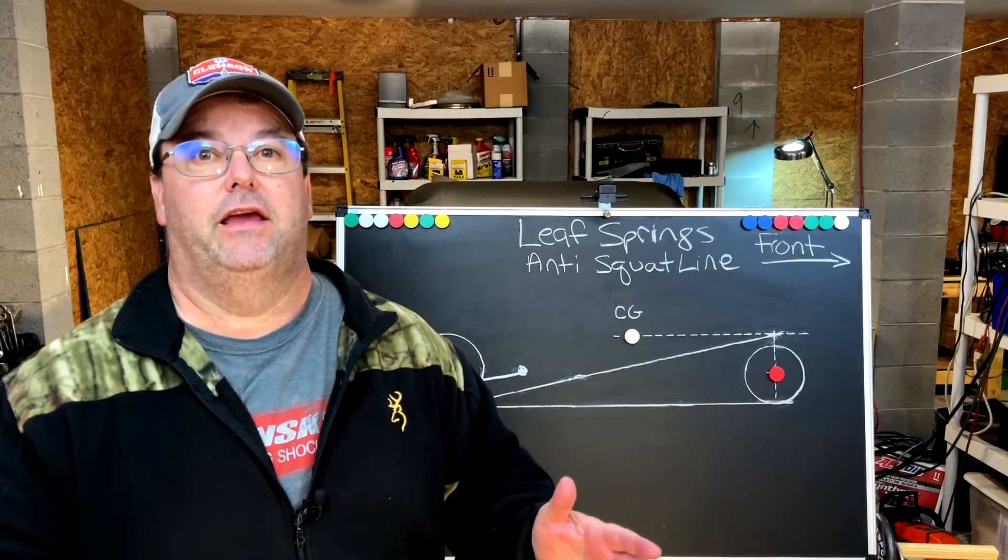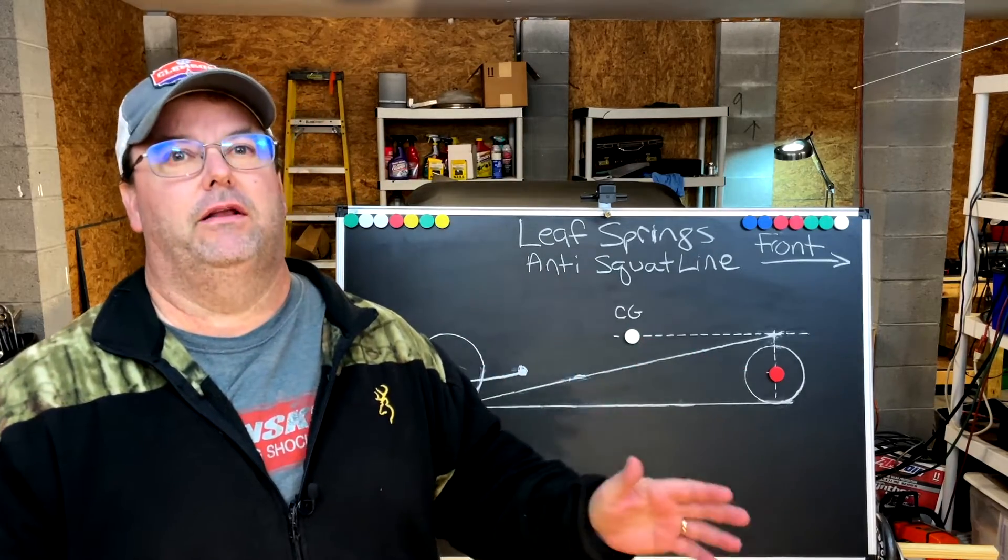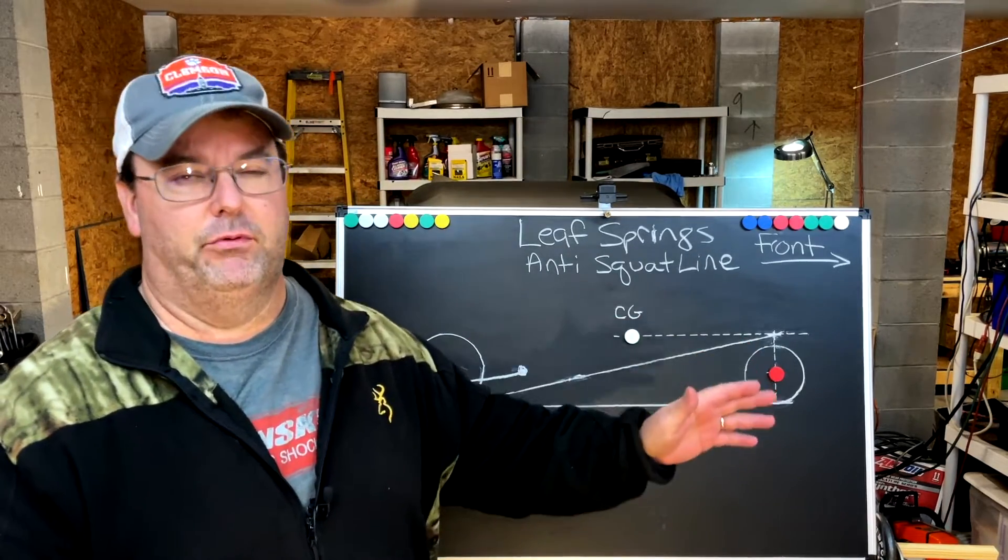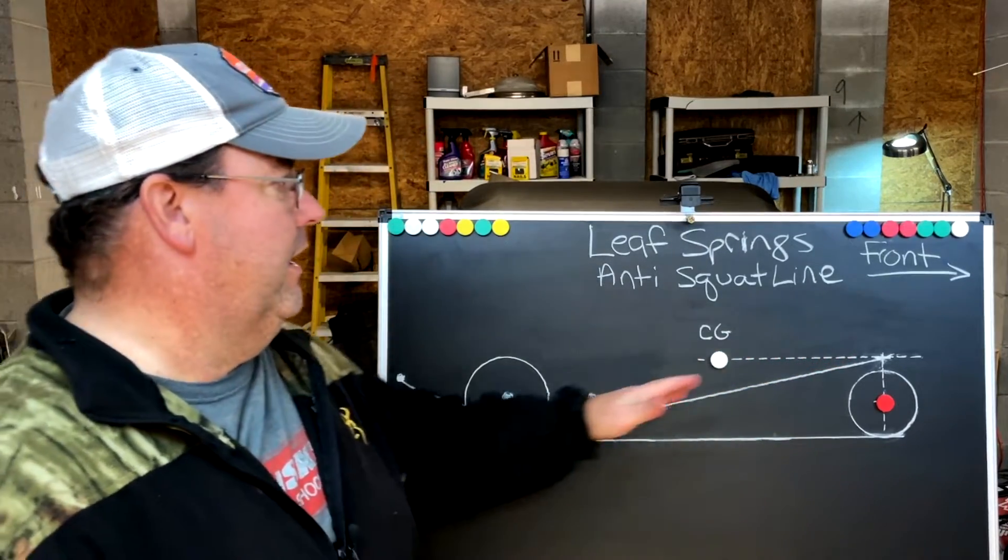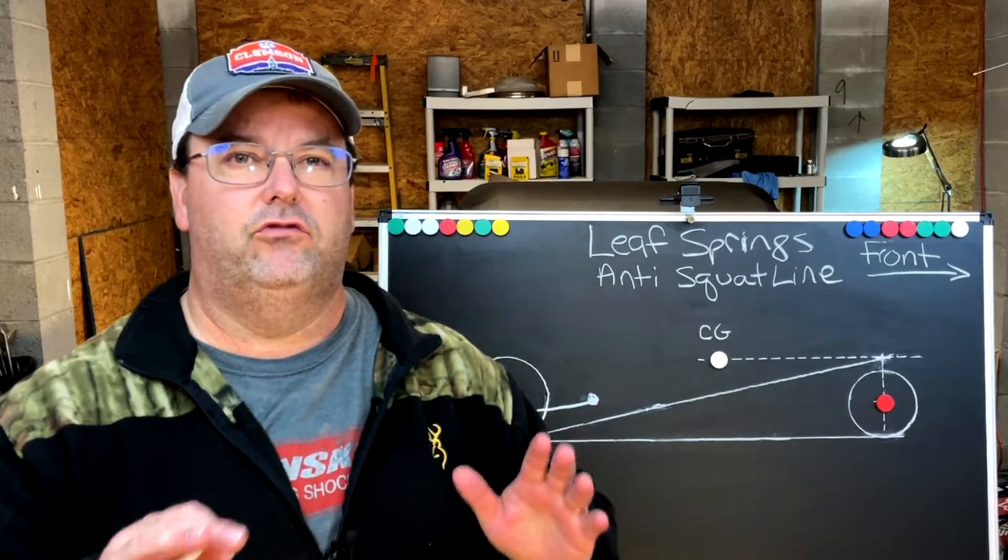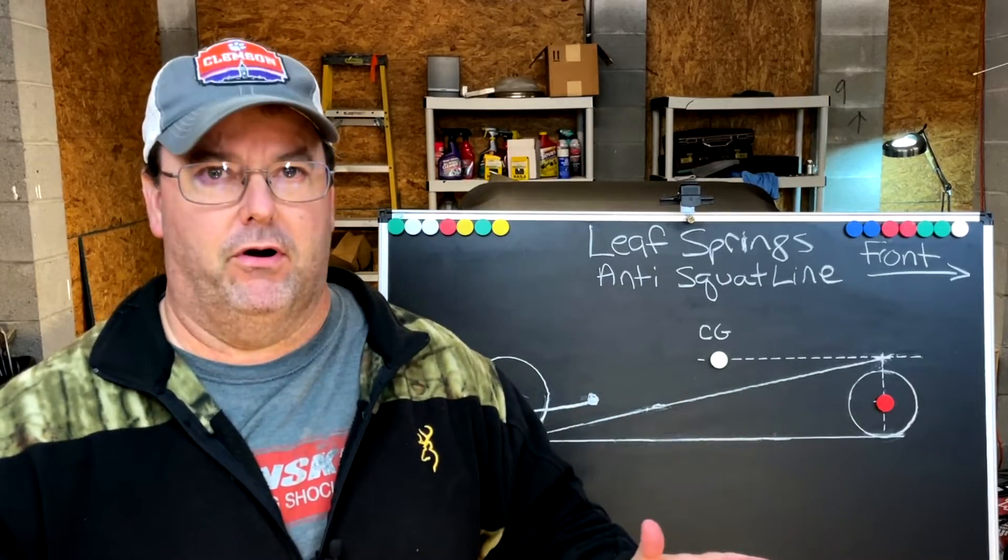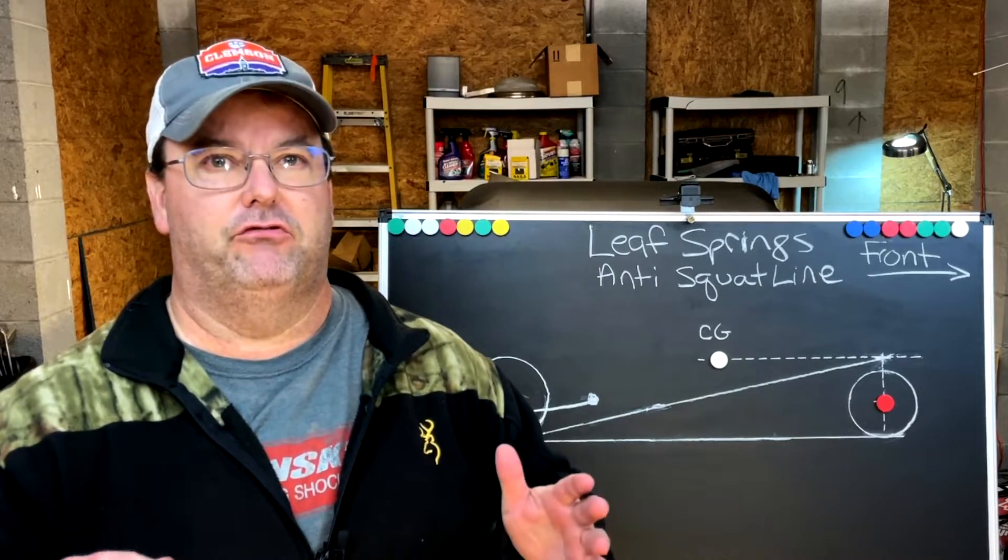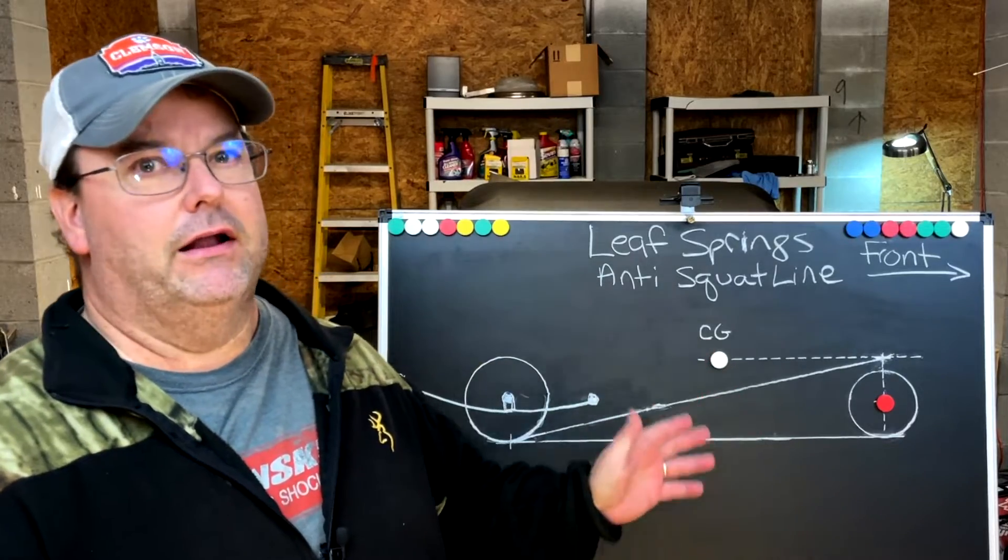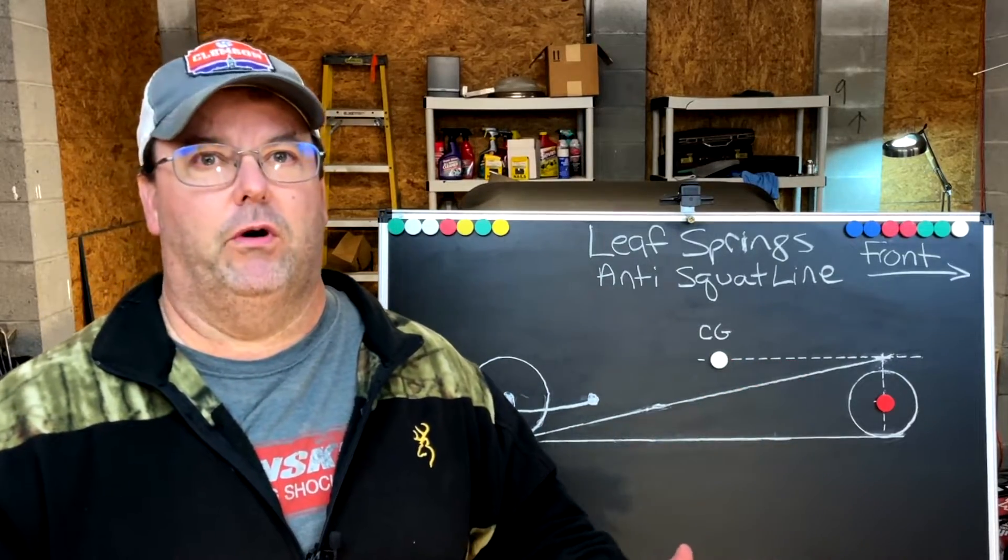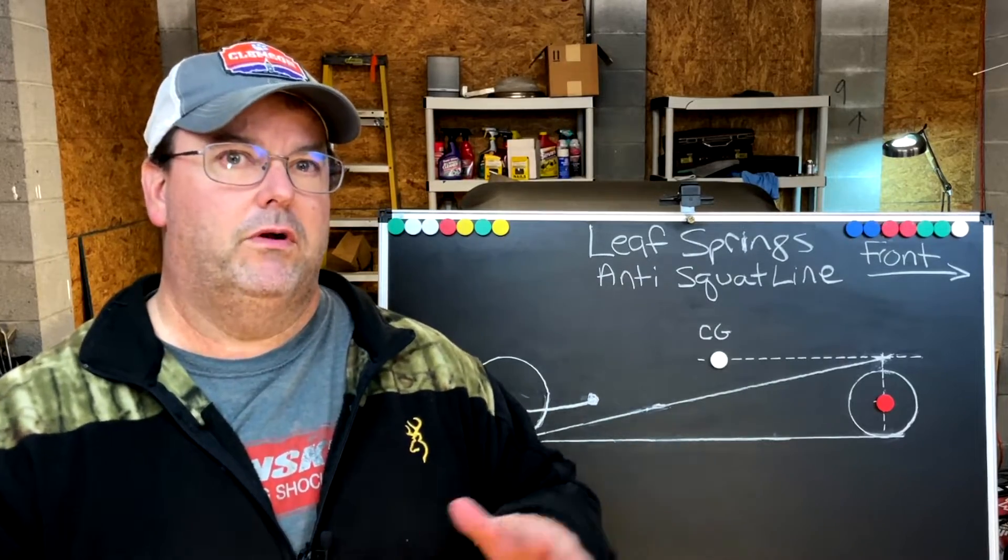Hey, welcome back to Kevin Wilson SBC. Absolutely, the anti-squat line applies to leaf spring cars. And let me pause for a minute. The anti-squat line is just one tool in our tool belt. There are many parts that make up the drag car chassis, and there are many things other than just plotting a point on the anti-squat line and going out and thinking your car is going to hook.